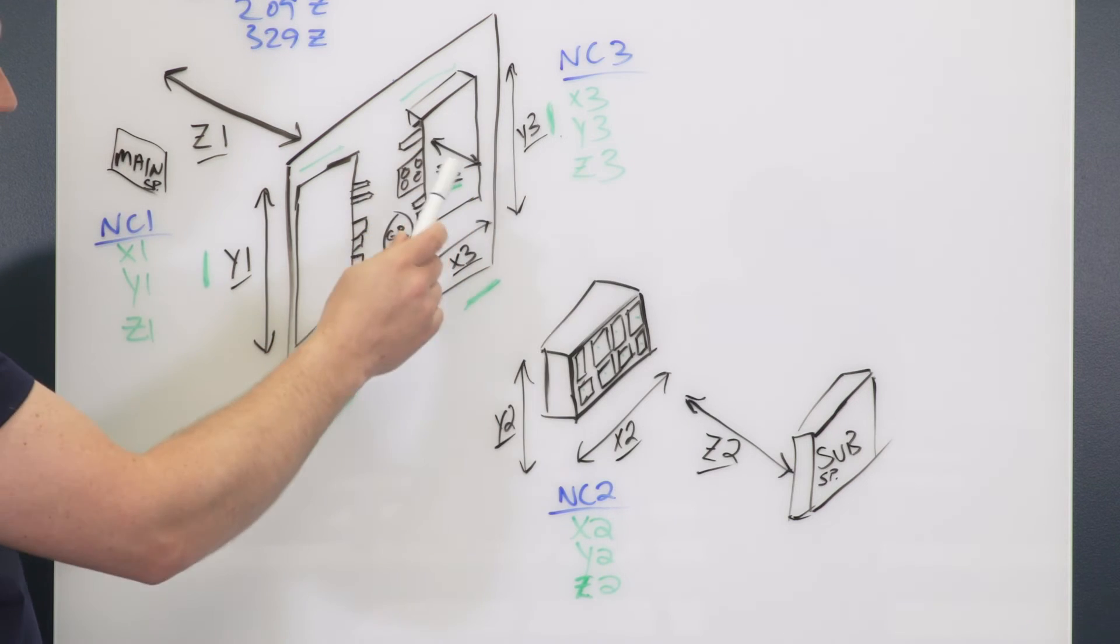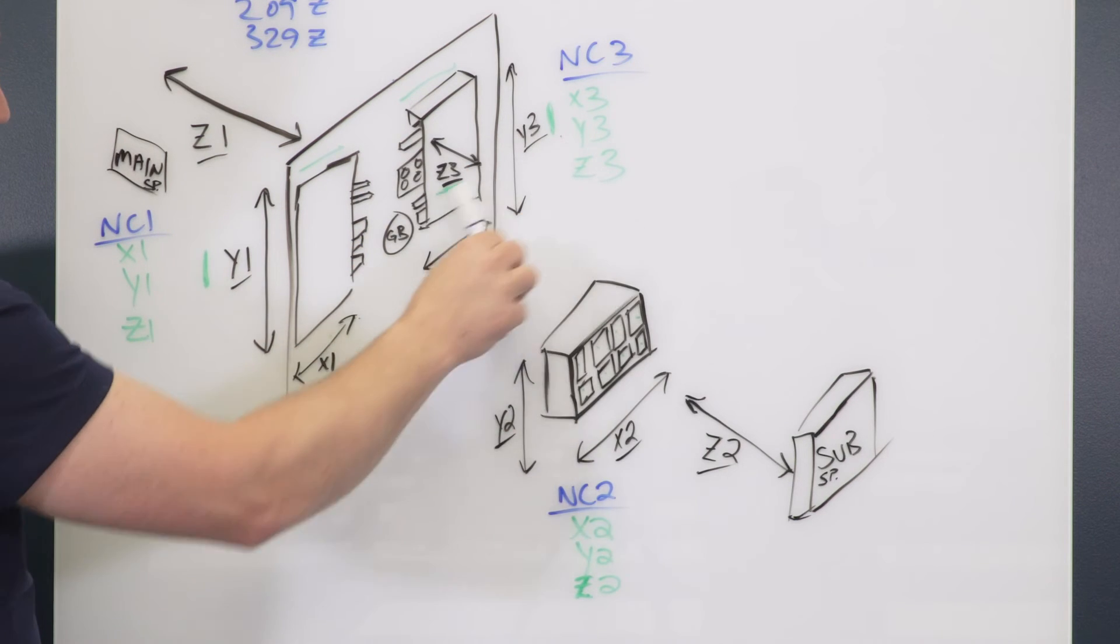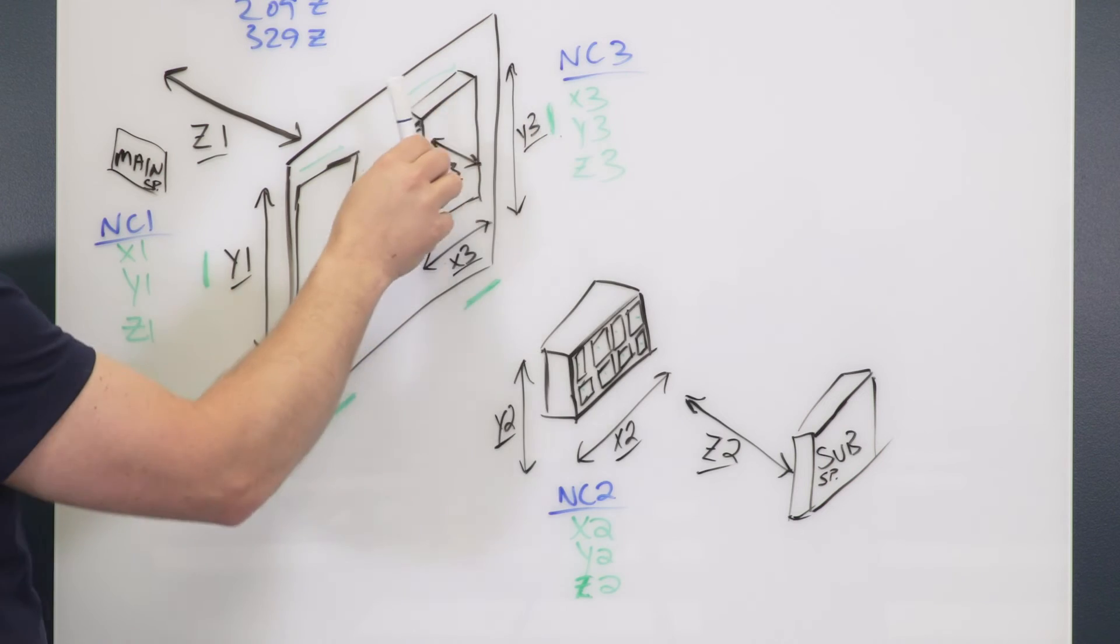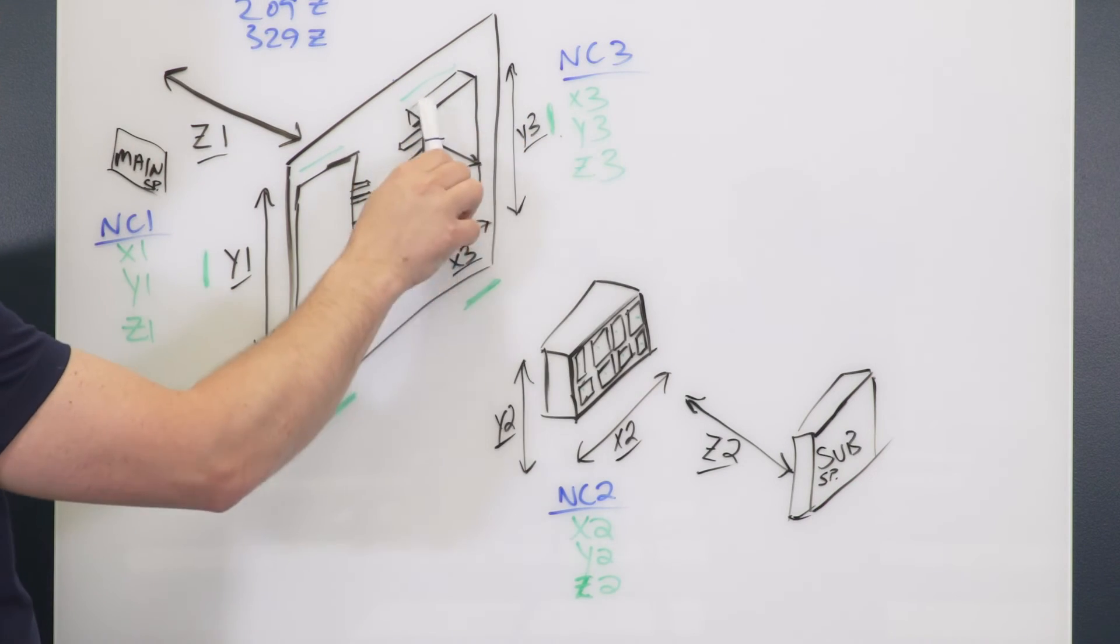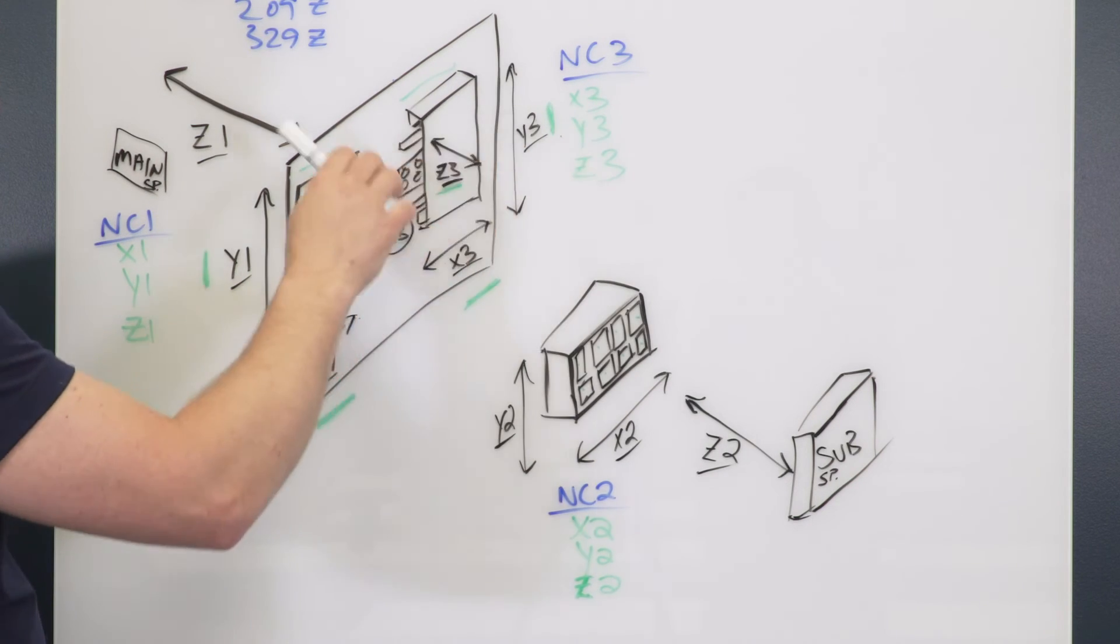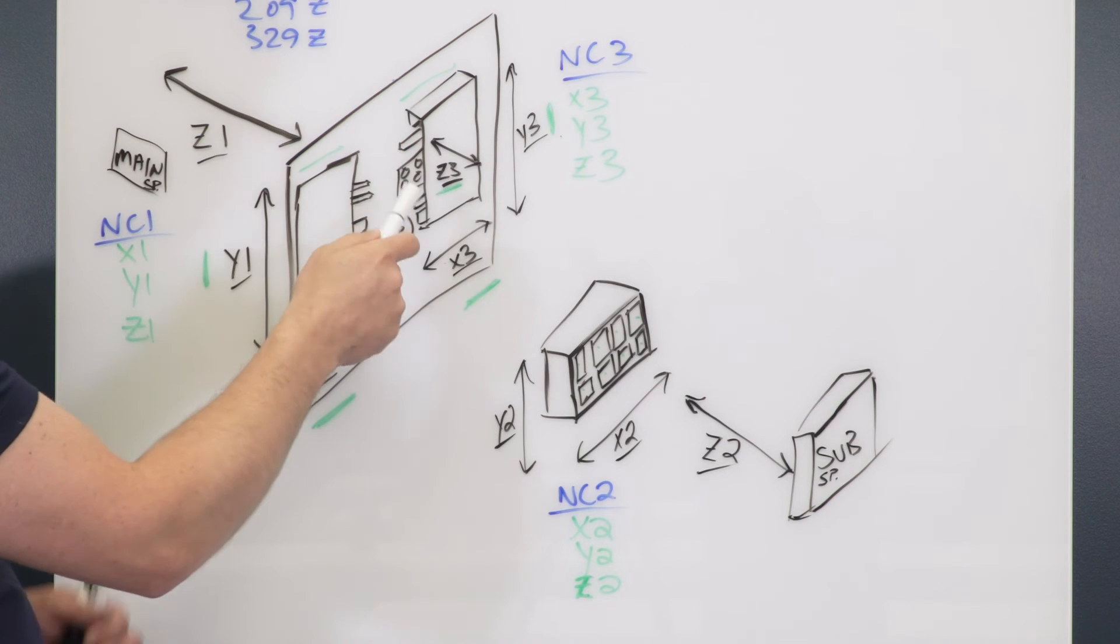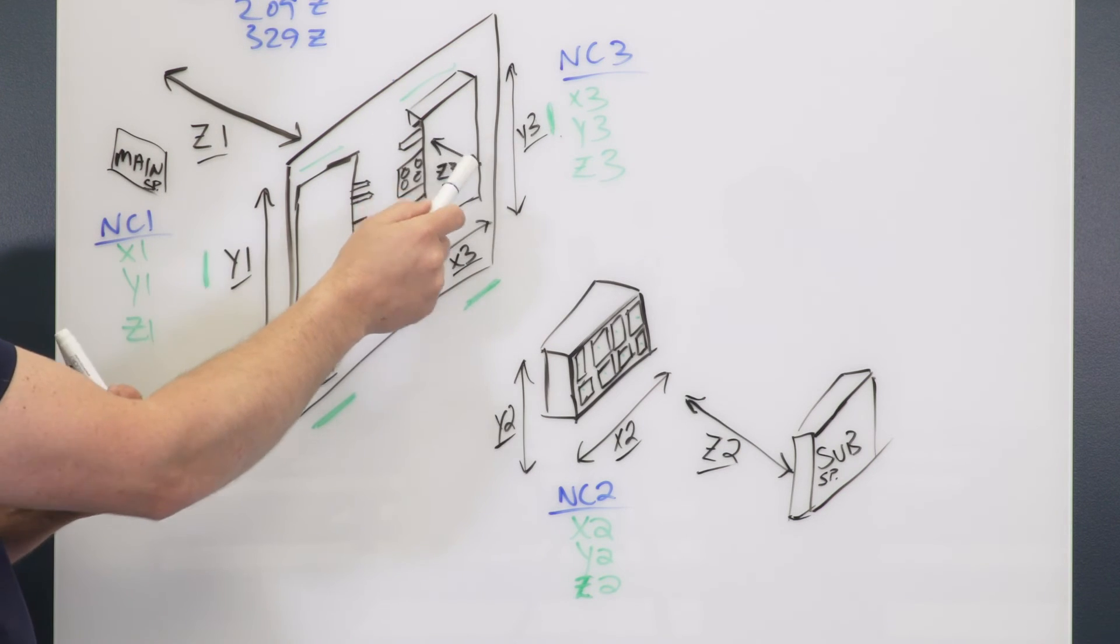That's going to be dedicated to this rear gang slide. You're going to have X3, Y3, and Z3 is going to move this rear gang slide completely independent to the front. We could actually be doing an internal thread with Z3 and an external thread with Z1, different pitches simultaneously.